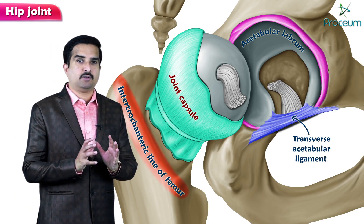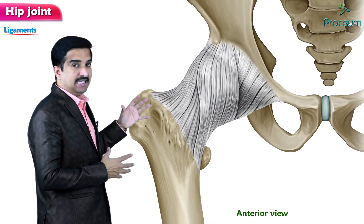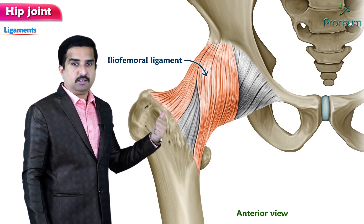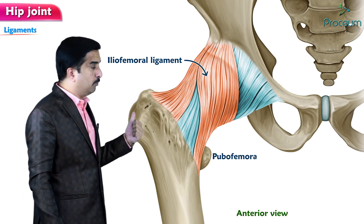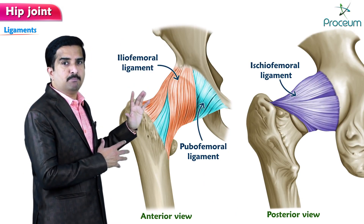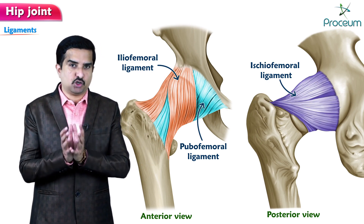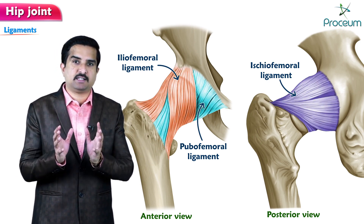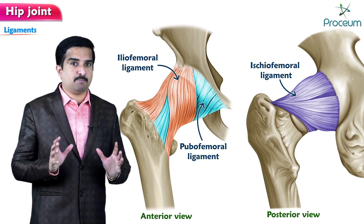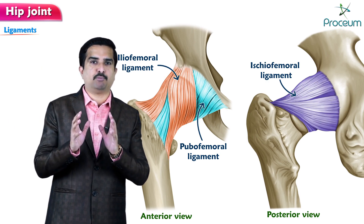Regarding the ligaments, focus on the iliofemoral ligament, the pubofemoral ligament, and the ischiofemoral ligament. All three of these important ligaments act to strengthen the mobile capsule of the joint. It is very important for us to concentrate on the ligaments of the hip joint, as they are essential to know.